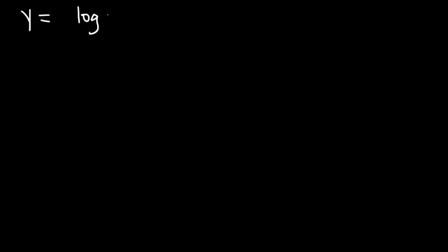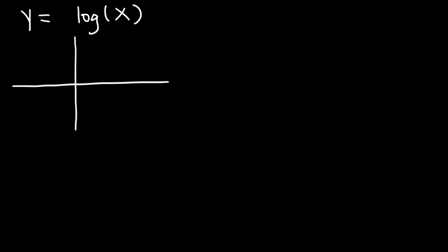Now, let's talk about graphing logarithmic functions. Let's go over the four basic shapes. So if you have log x, where x and y are both positive, kind of like what we did in the last lesson. In this case, the graph is going to travel towards quadrant 1.